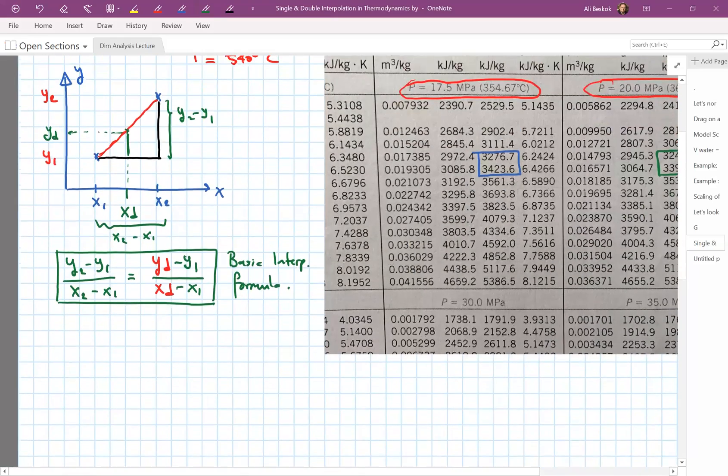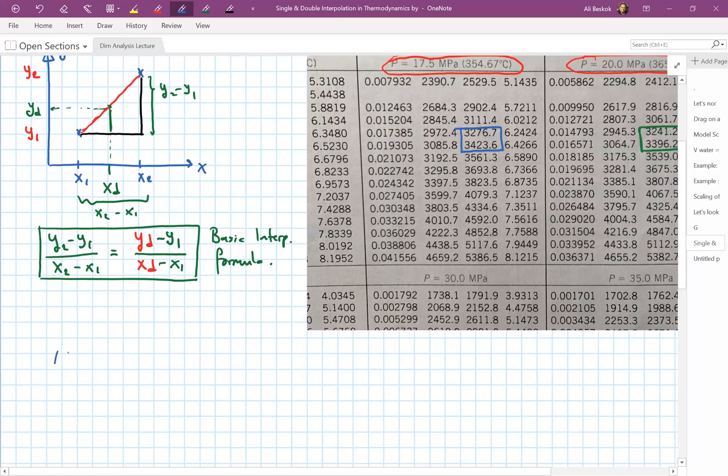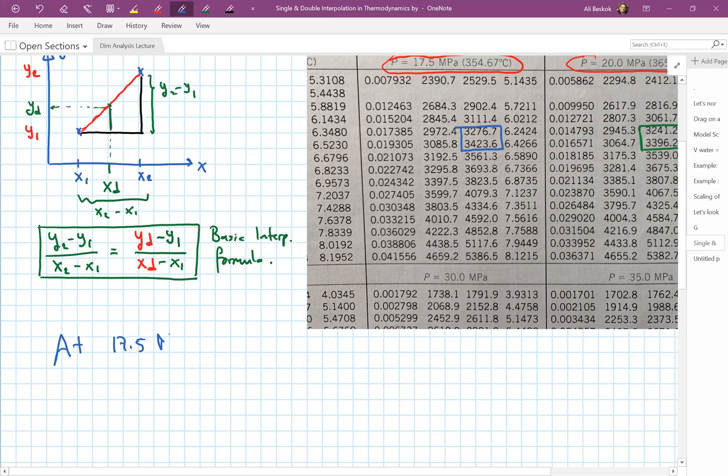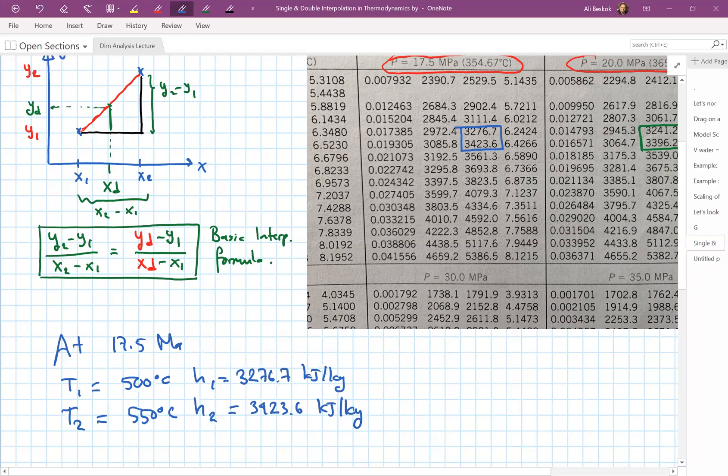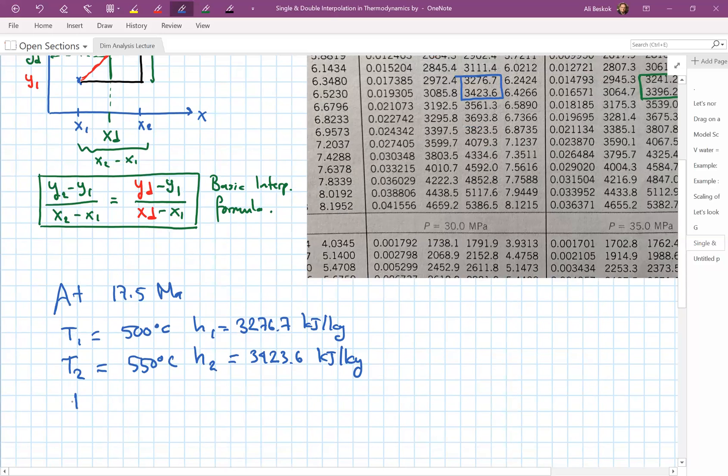Let's start doing that. First, the blue box at 17.5 MPa. At 17.5 MPa, T1 is 500 degrees Celsius, T2 is 550 degrees Celsius. H1 is 3276.7 kilojoules per kilogram, while H2 is 3423.6 kilojoules per kilogram. I have these two values, and I'd like to figure out the enthalpy value at the desired temperature of 540 degrees Celsius.